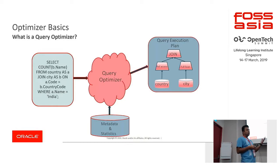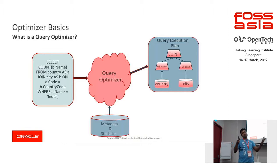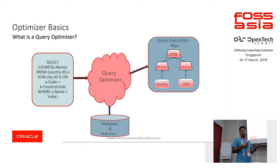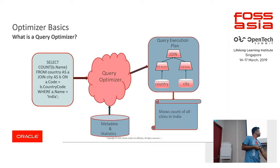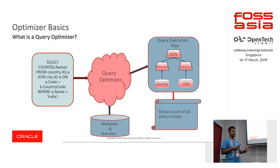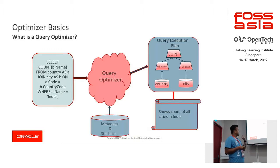We call the optimizer the heart of a database. It's a very complicated module in MySQL which takes care of all the things that we see. At the end of the day, the optimizer helps us execute queries and gives you the results — for example, showing the count of all the cities in India.